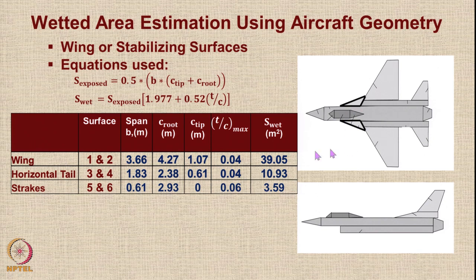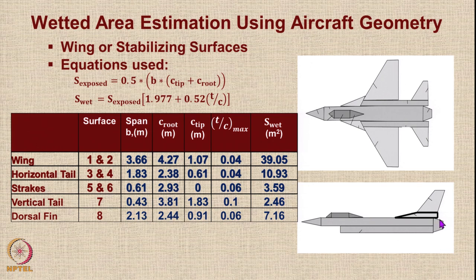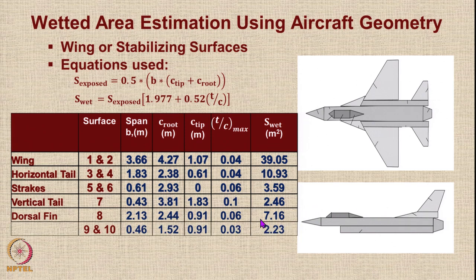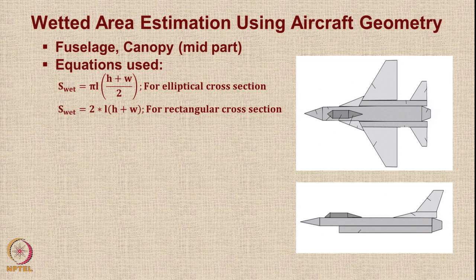The vertical tail is a simple trapezium with known root chord, tip chord, and span. The dorsal fin below the vertical tail is also a standard geometric construct. There are also two hidden surfaces that contribute slightly. For the fuselage and canopy mid-part, we calculate wetted area using standard formulae depending on whether the cross section is elliptical or rectangular. For the fuselage, the cross section is closer to elliptical.